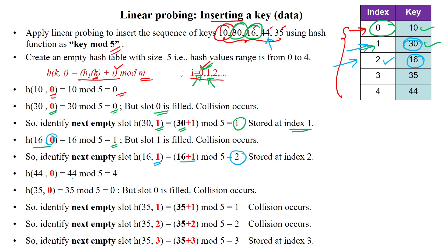Next we insert 44. With probe sequence 0, we calculate 44 mod 5, which gives 4. Index 4 is free, so we store 44 at index 4. Then we insert 35. Starting with probe sequence 0, 35 mod 5 gives 0, but index 0 is already filled. We increment to probe sequence 1, giving index 1, but index 1 already has 30, so collision occurs again.